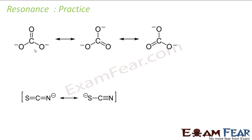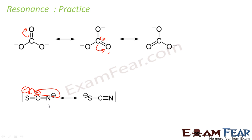In another example, moving electrons from one position gives a negative charge here and a positive charge there — the positive and negative form a bond. Doing it from the other side gives the opposite charges, and those also form a bond. For a compound like SC≡N⁻, breaking a bond in this fashion gives a negative charge and a positive charge; the negative and positive combine to form a triple bond, giving you a second resonating structure.